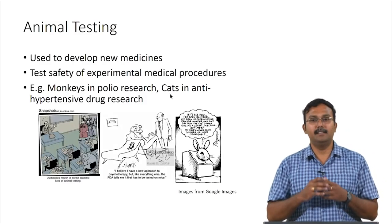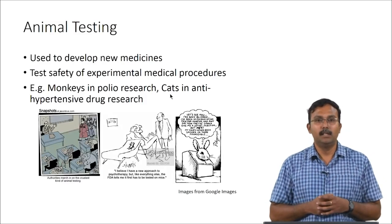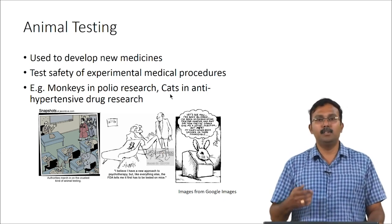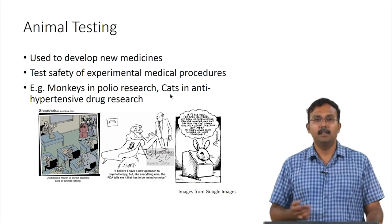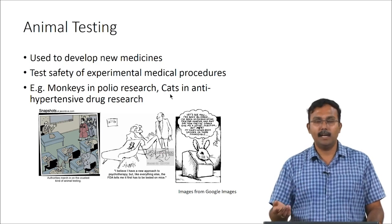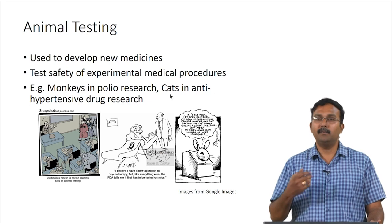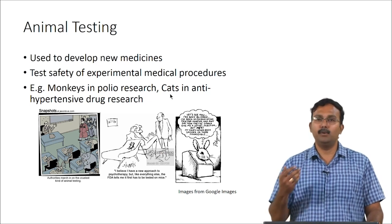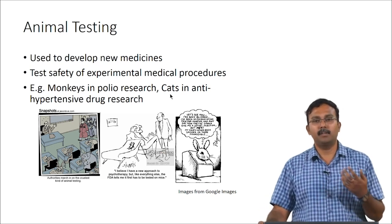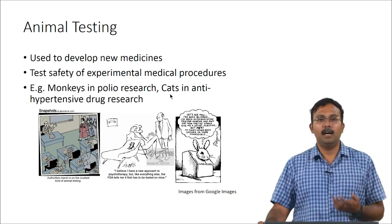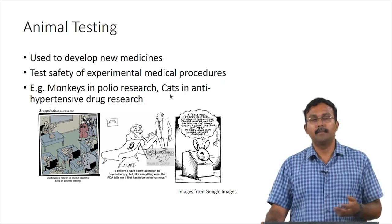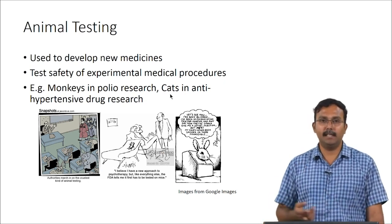What are the dilemmas here? When talking about animal testing, people have done this in the past — it is used to develop new medicines or therapies. Testing the safety of experimental medical procedures in animals before humans is important. Some examples would be monkeys used for polio research or cats for hypertensive drug research. However, is this acceptable? Is this truly a representative model? Those are some of the questions which cause an ethical debate.